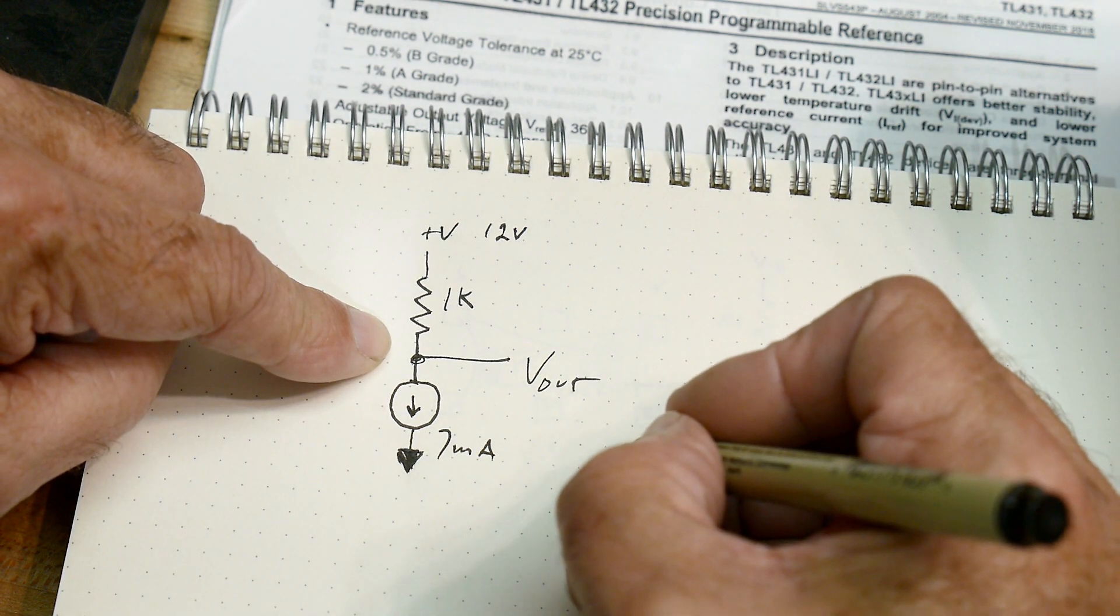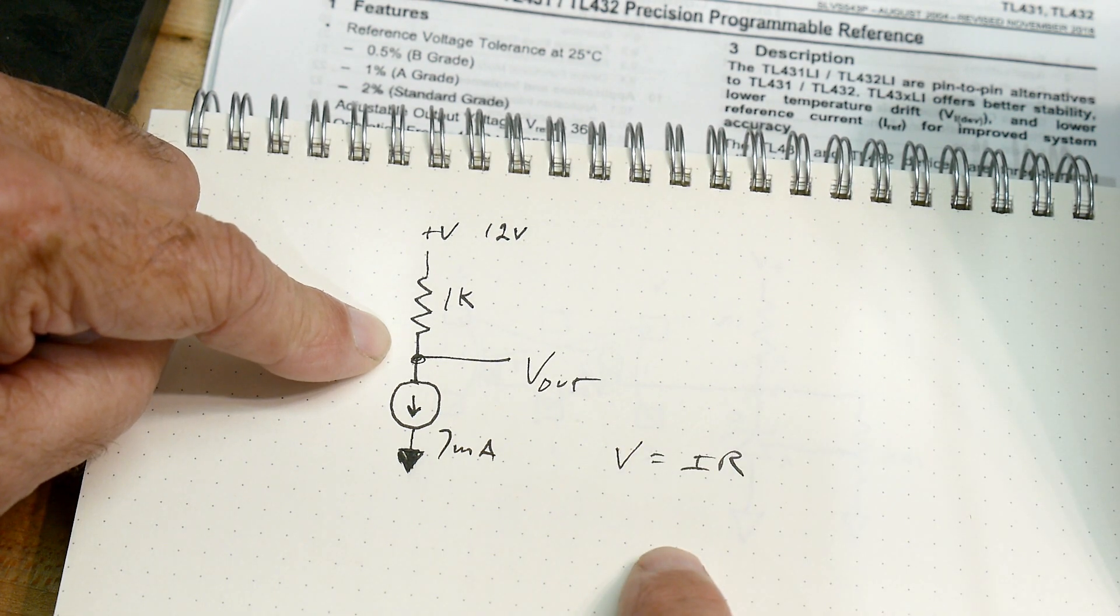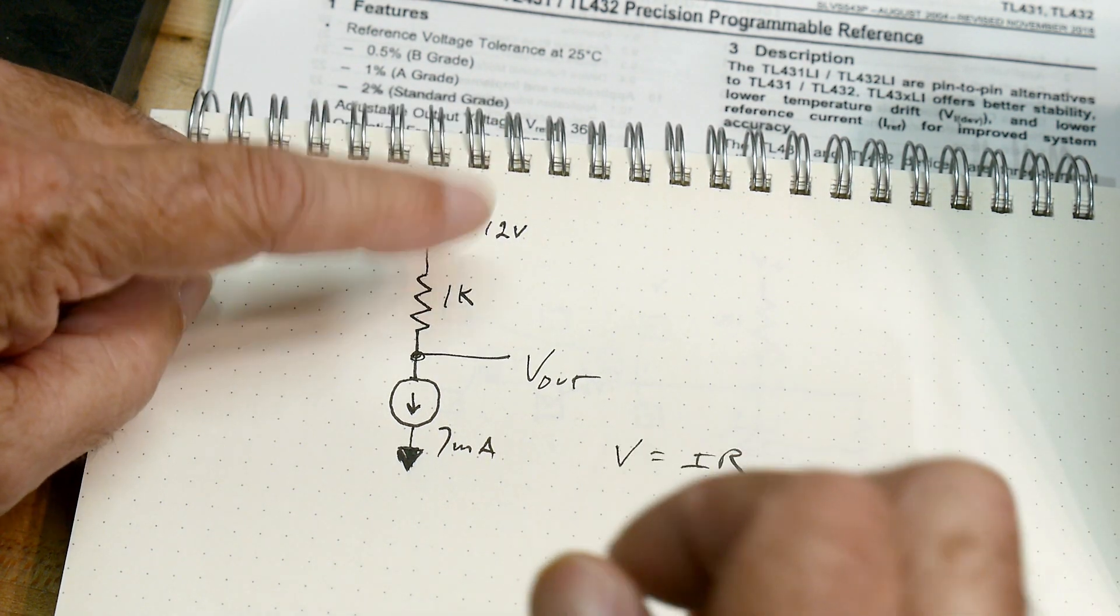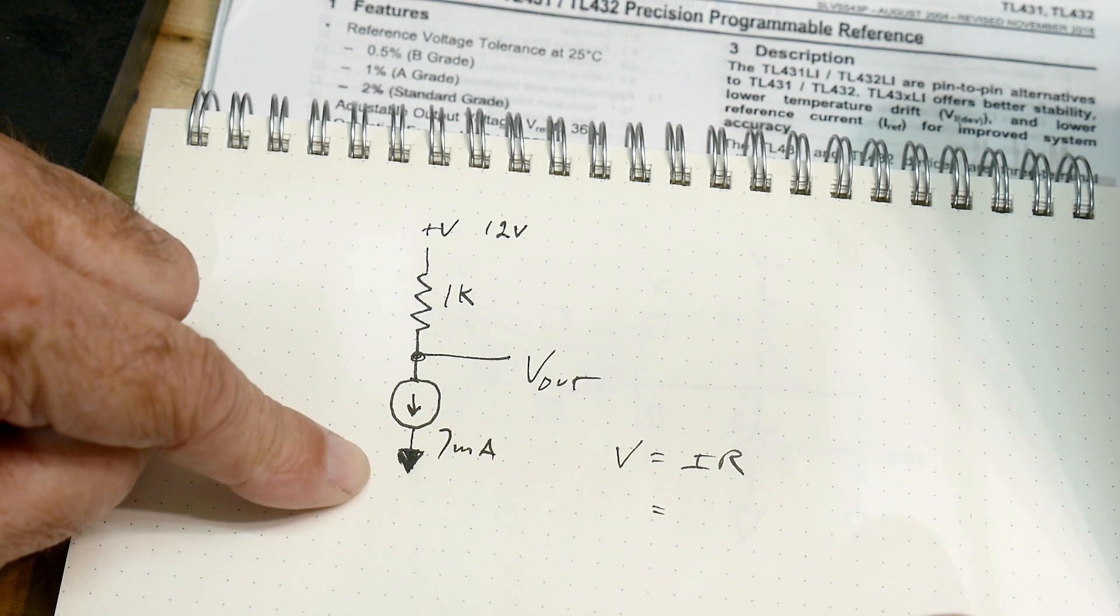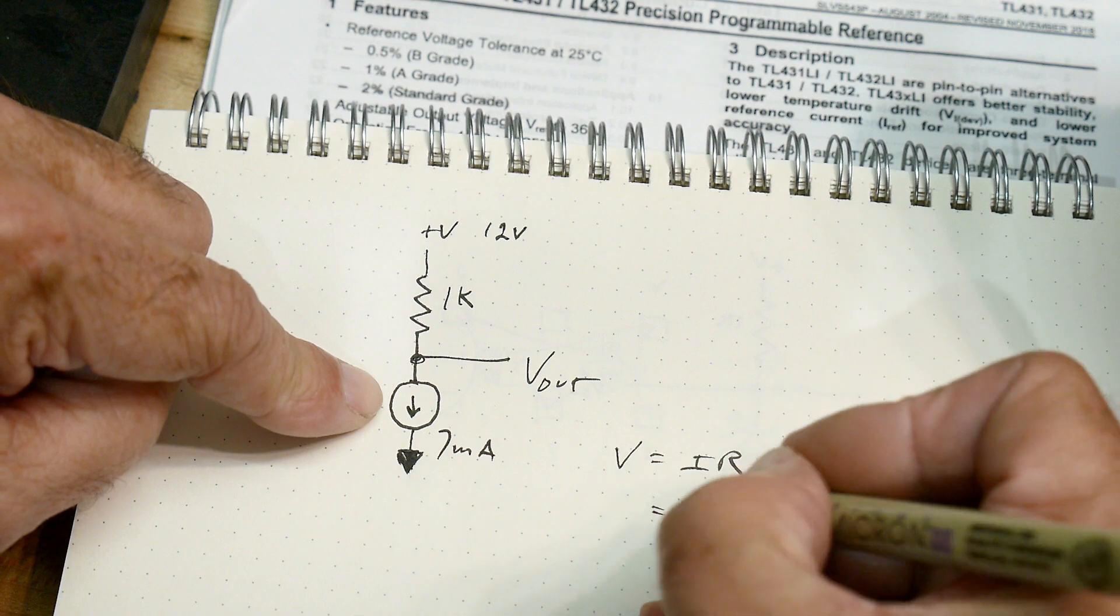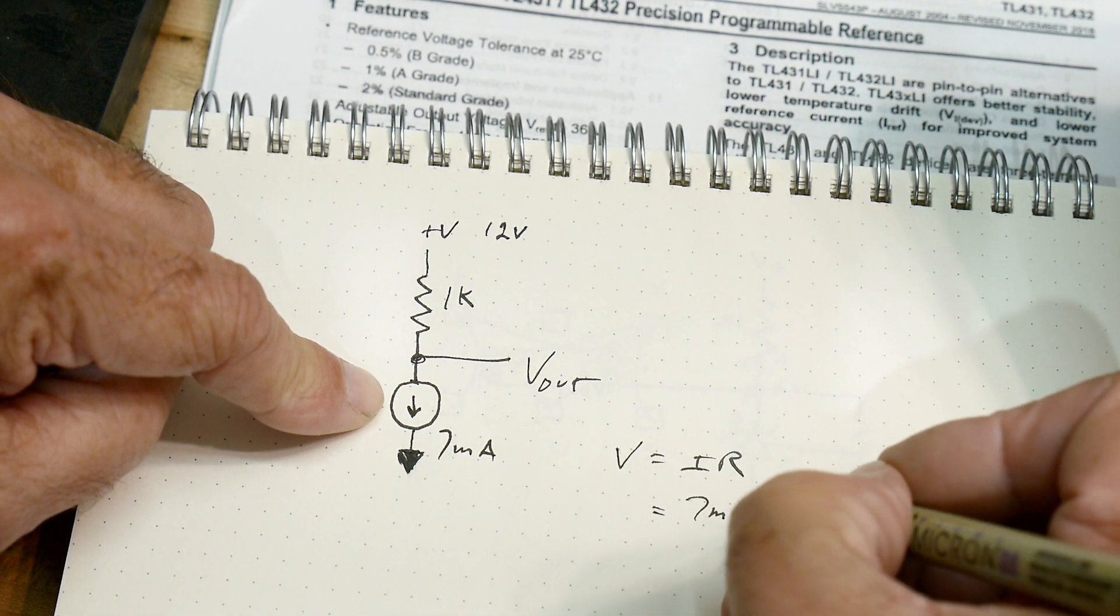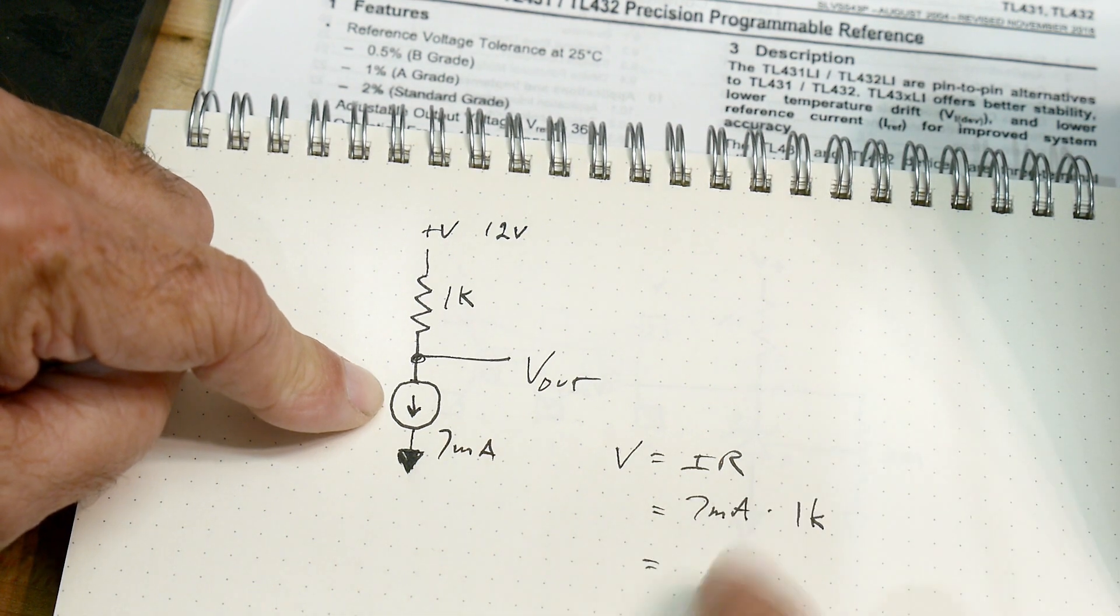Well, remember voltage equals current times resistance. Okay, so we know the resistance is 1k and the current is 7 milliamps. So 7 milliamps times 1k. So what does that mean?